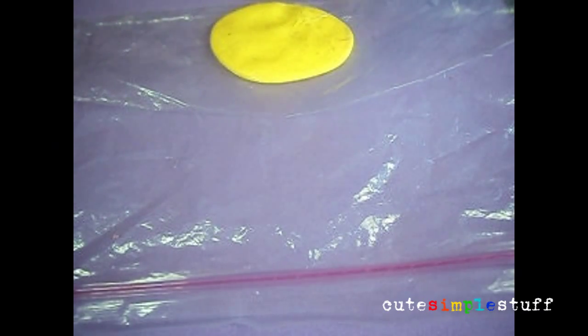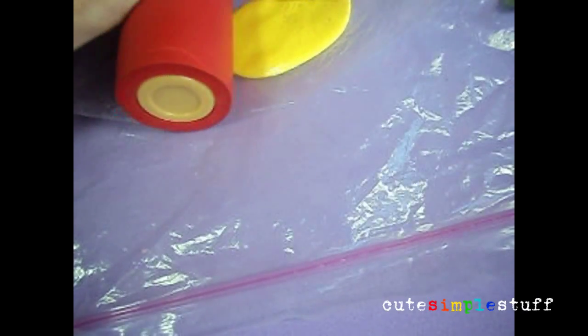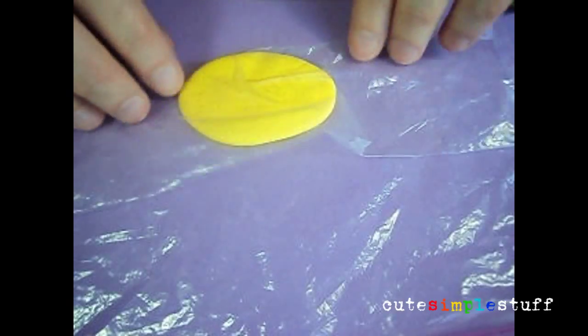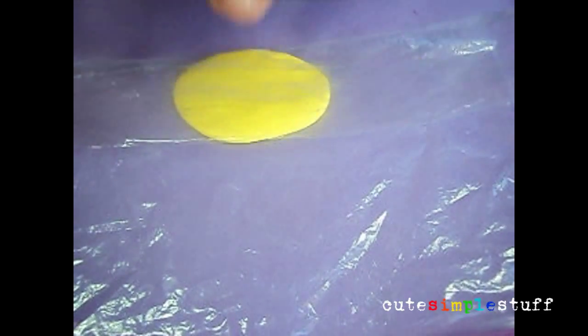The first thing I did was grab a piece of yellow clay using Sculpey and then put it between two pieces of Ziploc bag to make it smooth without my fingerprints all over it.